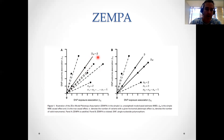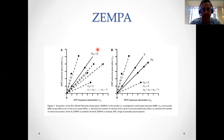It just so happens, because ZEMPA is satisfied here, that beta m is also equal to the true causal effect. So in panel A, ZEMPA is satisfied and our simple mode-based estimator is an estimate of the true causal effect.